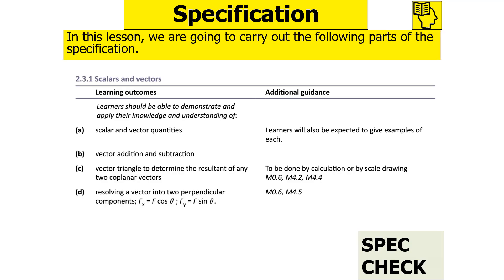In this lesson we're going to be looking at the following part of the OCR A-level physics specification: 2.3.1 scalars and vectors, and in particular resolving a vector into two perpendicular components.